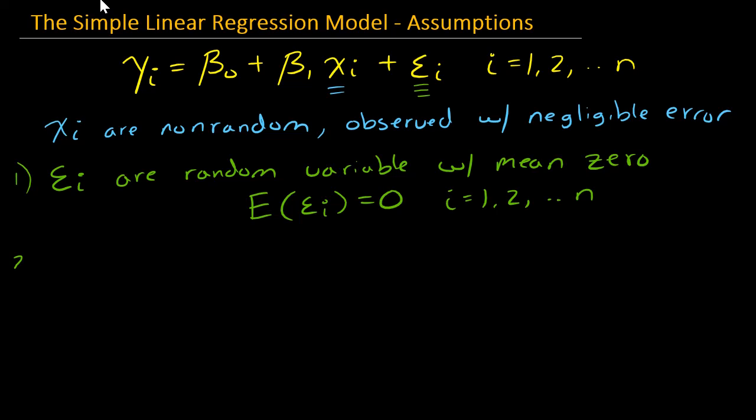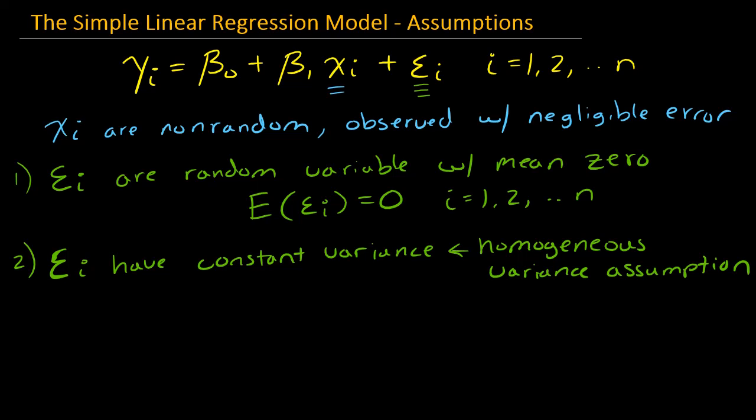The second assumption for the model error is that epsilon sub i have constant variance, and this constant variance is often referred to as the homogeneous variance assumption. Later you will see me refer to this just as the homogeneous variance assumption, and that means that we have constant variance. So what this means is that if I take the variance of epsilon sub i, I'll get sigma squared, and notice sigma has no i. So it does not depend on which observation we're looking at. The variance is constant. It is sigma squared. So this is for all i, i equals one, two, all the way to n.